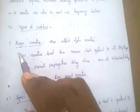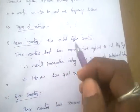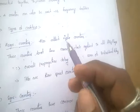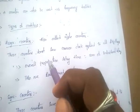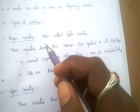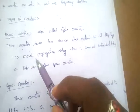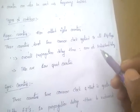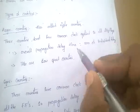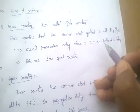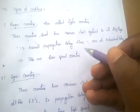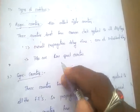Asynchronous counters are also called ripple counters. These counters do not have a common clock applied to all flip-flops. The overall propagation delay equals the sum of individual delays — the delay for each flip-flop. So the total time increases, and as time increases, speed decreases. That's why they are called low-speed counters.